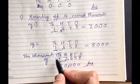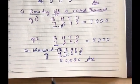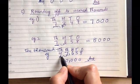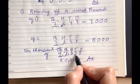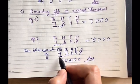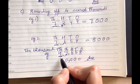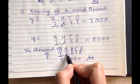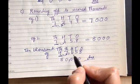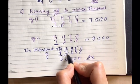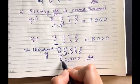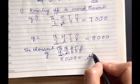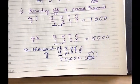Similarly, the same process applies for rounding to the nearest ten thousand. Take the example 47658. The digit at the ten thousands place is 4; underline it and check the digit to its right, which is 7 — greater than 5. So 4 becomes 5 and the rest of the digits become 0. That is the answer. Thank you.